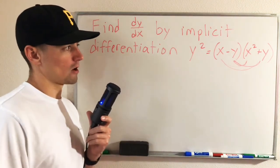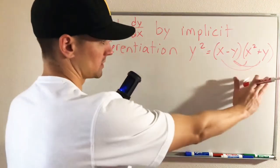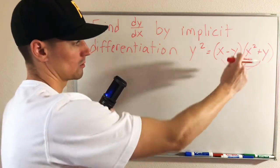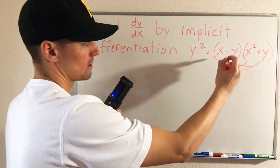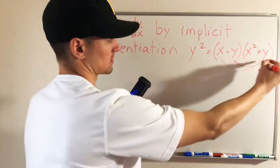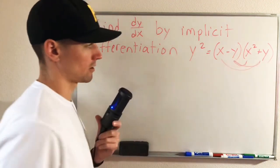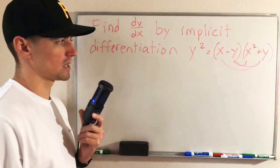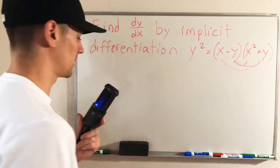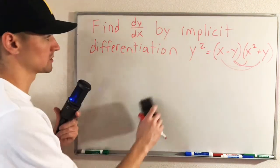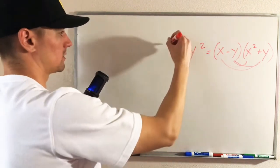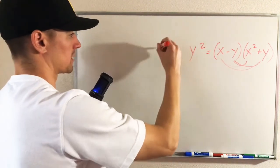Our other option is to just apply implicit differentiation right off the bat and use the product rule, where x minus y is one of our functions and x squared plus y is our other function. And in fact, in this case, that may be the easiest option for us.